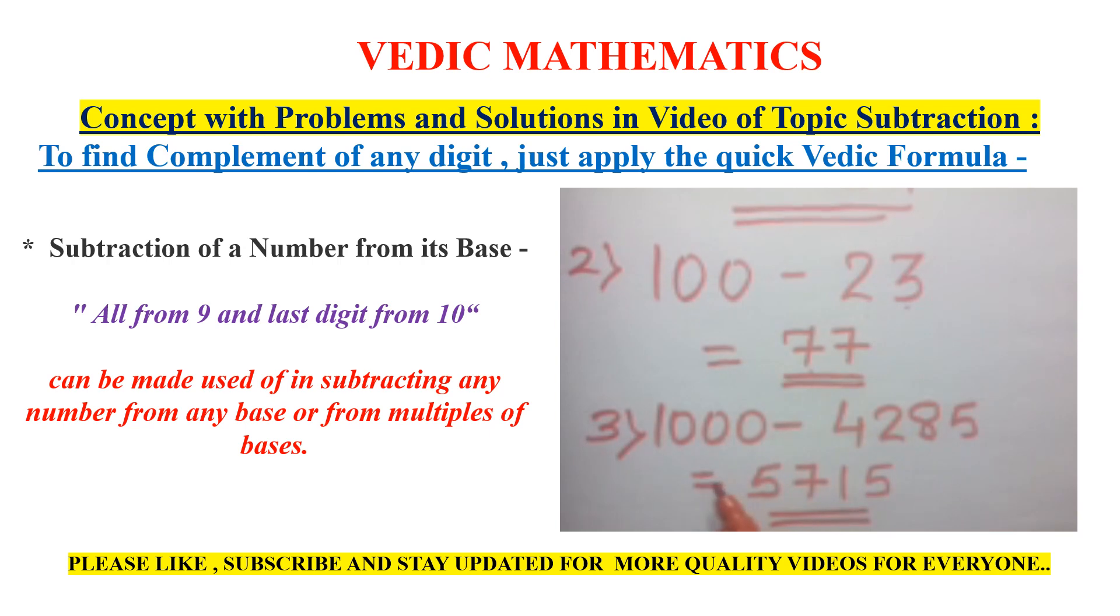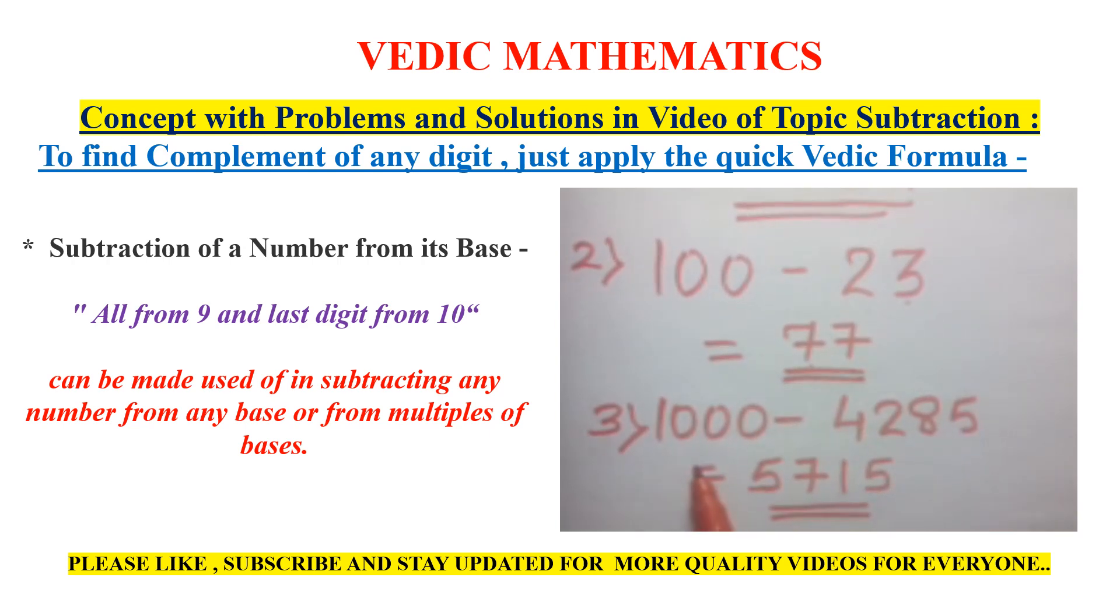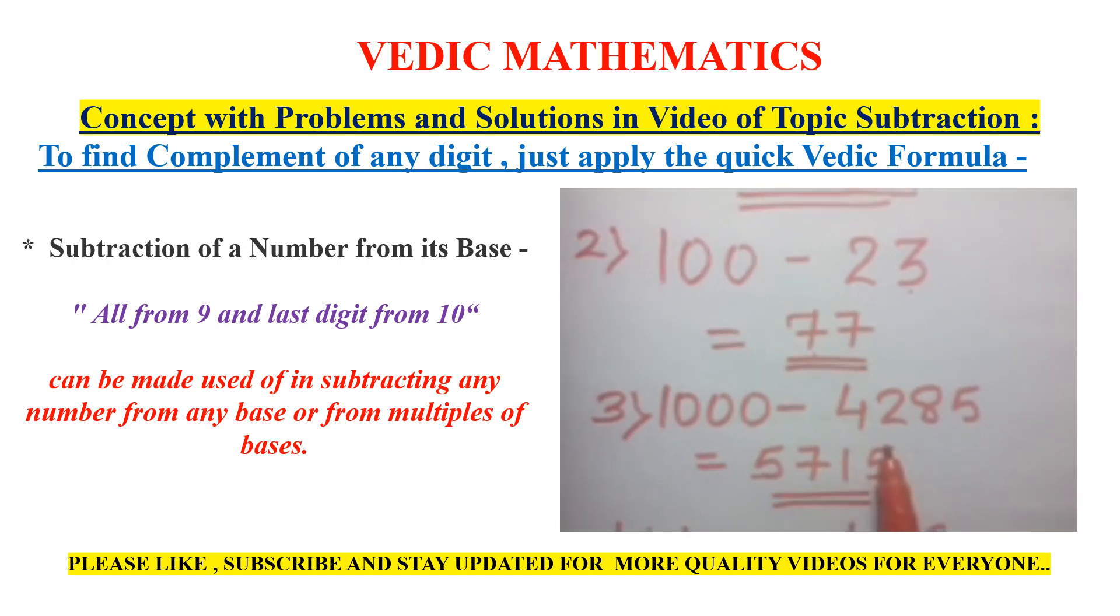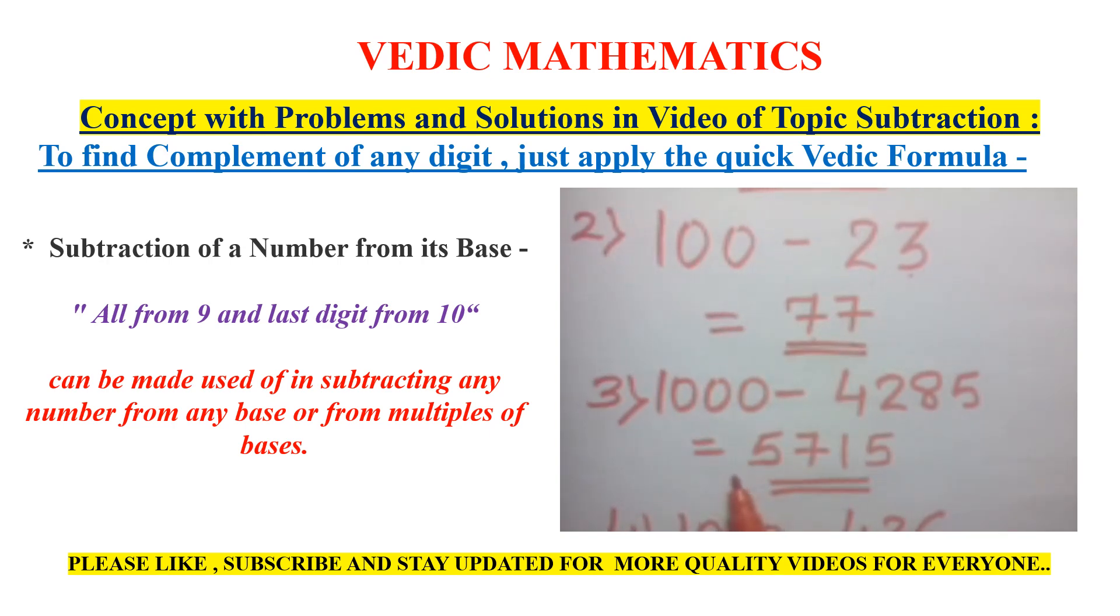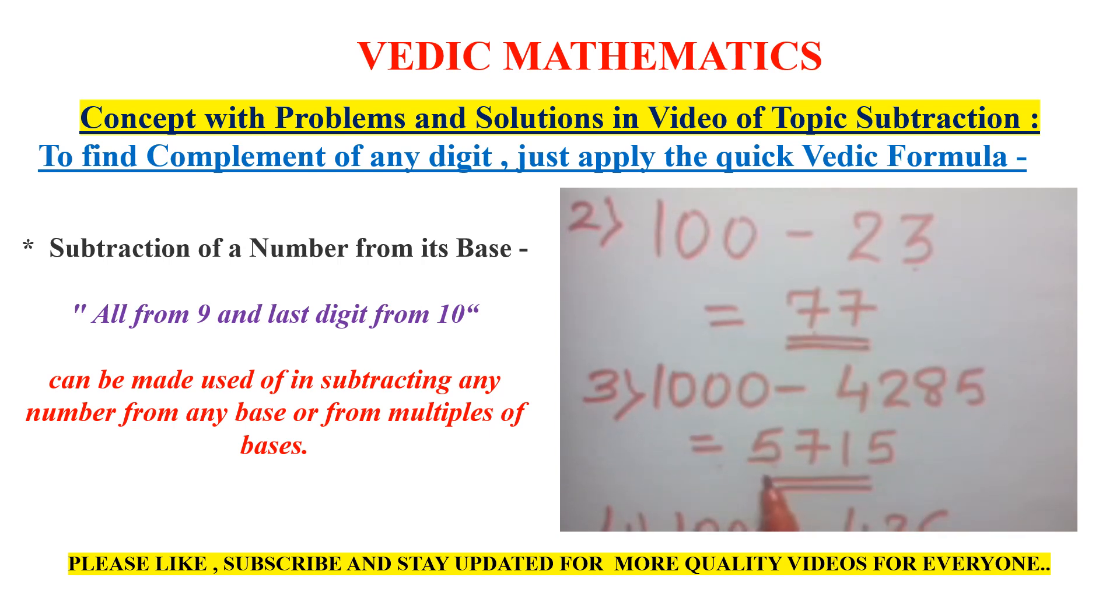Take another example, 1,000 minus 4285. 4's complement is 5, 2's complement is 7, 8's complement is 1. And 5, that is the last digit, so 10 minus 5 would be 5. The answer is 5715.